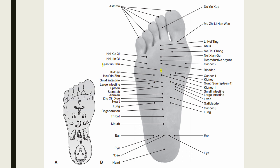The Qian Yin Ju point is located 0.4 unit distal to the Kidney 1 point (Yongquan), at 7.4 units from the heel on the midline. Indications include high blood pressure, seizures, schizophrenia, and coma due to high fever. The Hoe Yin Ju point is located 0.4 unit and 1 unit lateral to the Kidney 1 point (Yongquan), at 6.4 units from the heel. Indications include high blood pressure, seizures, schizophrenia, and coma due to high fever.